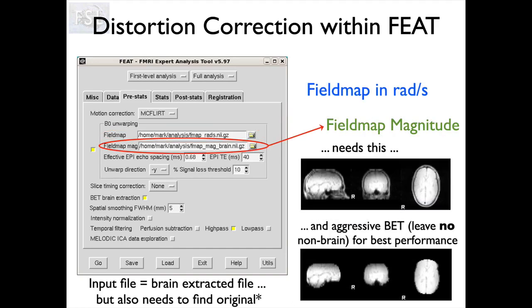You also need to provide the magnitude image, which looks like a normal brain image though not great quality, and its brain-extracted version. For this brain extraction we're very particular — we want it to leave no non-brain material behind, because right at the edge of the brain we have lots of noise in our field maps. The brain extraction should be tight: it's better to clip a little bit of brain at the edge than to leave non-brain material behind, so we sometimes deliberately erode the image and shrink it down slightly.